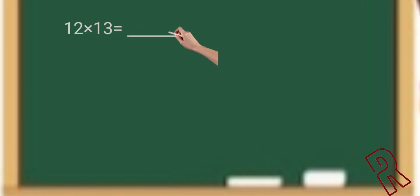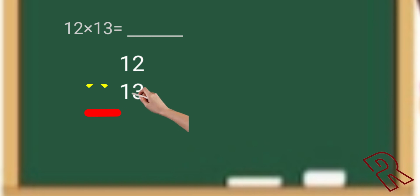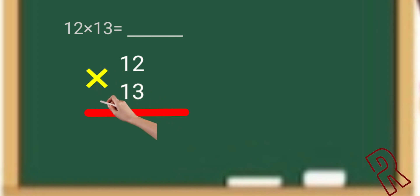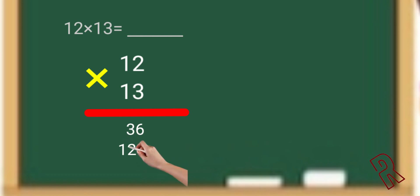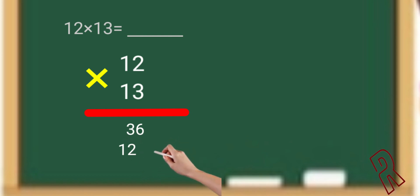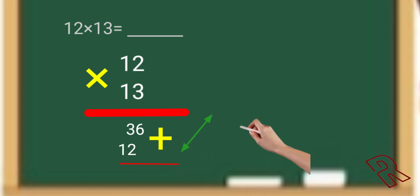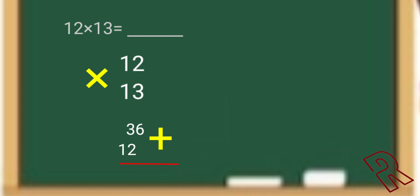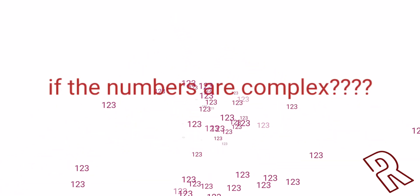How do we calculate 12 × 13? The steps we follow: write 12 and 13 with a multiplication symbol. Multiply 3 with 2, write the answer; multiply 3 with 1, write the answer; then come to the next line and multiply 1 and 2, and 1 and 1, find all these together and we get the answer 156. But if the numbers are more complex, how do we calculate?